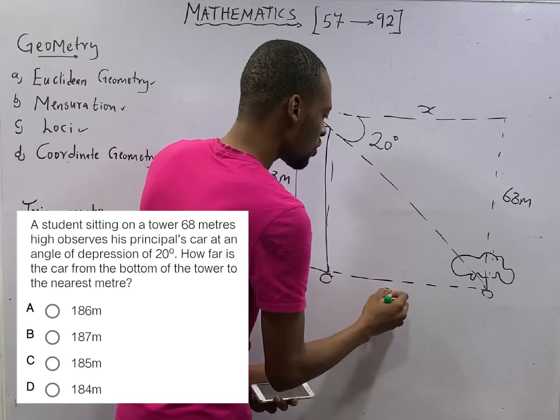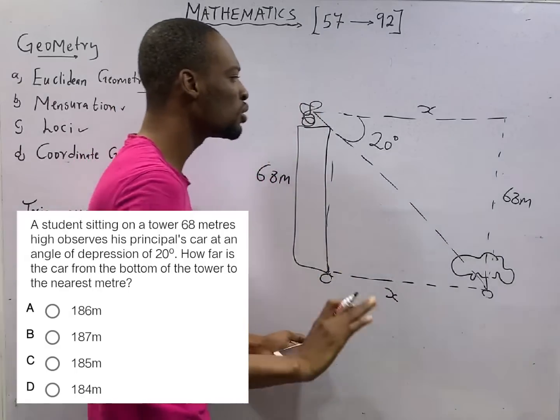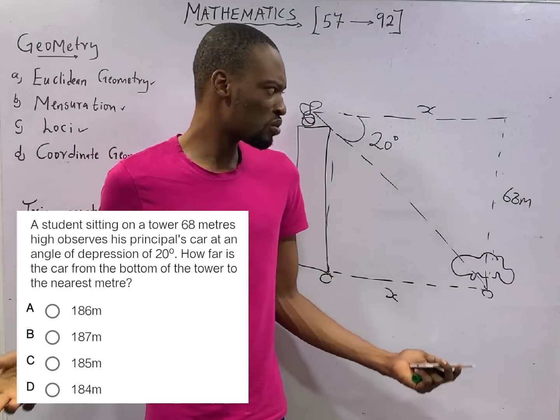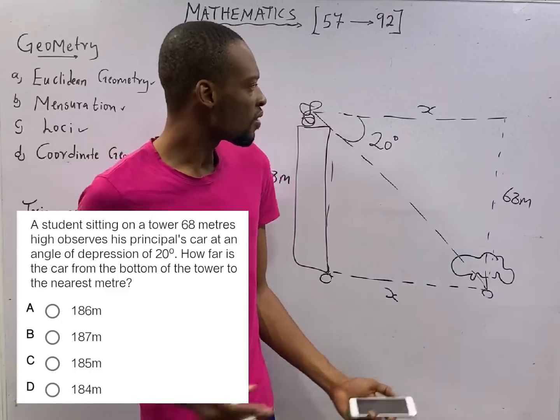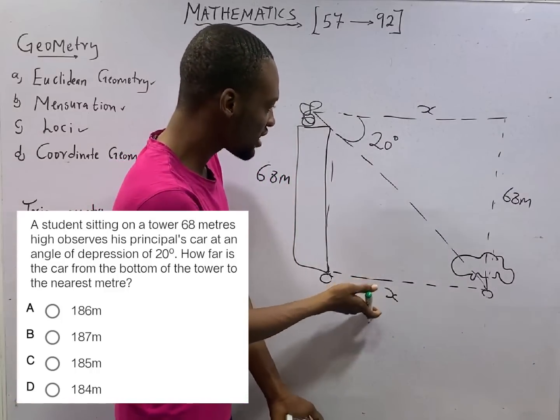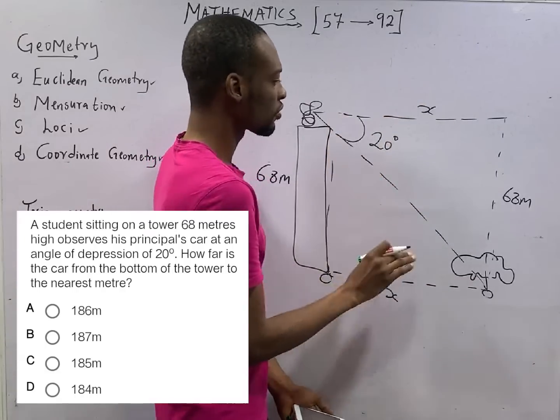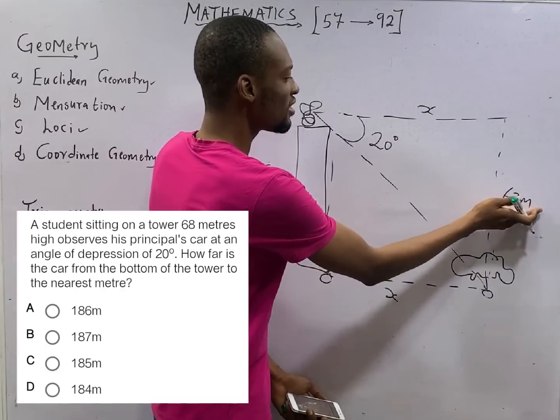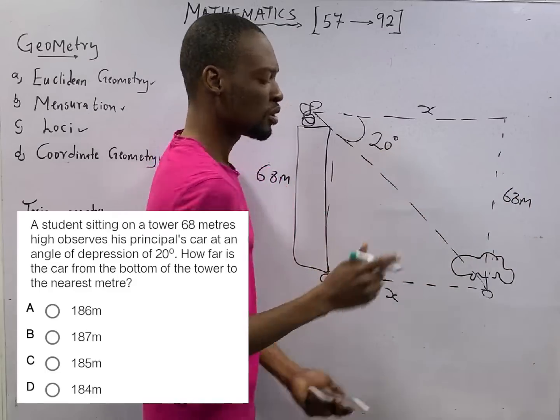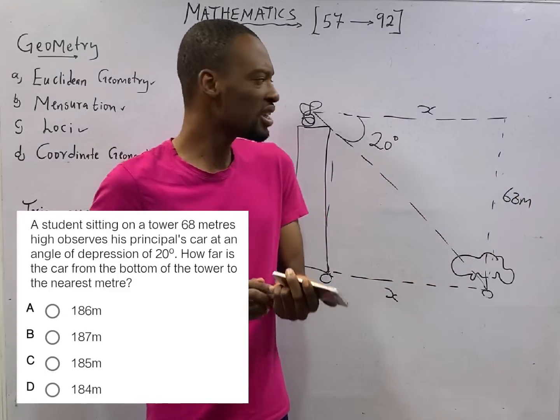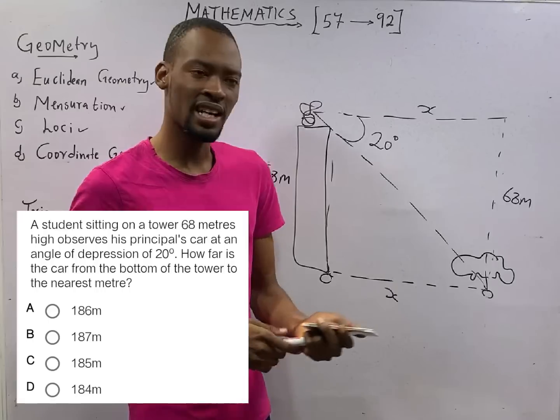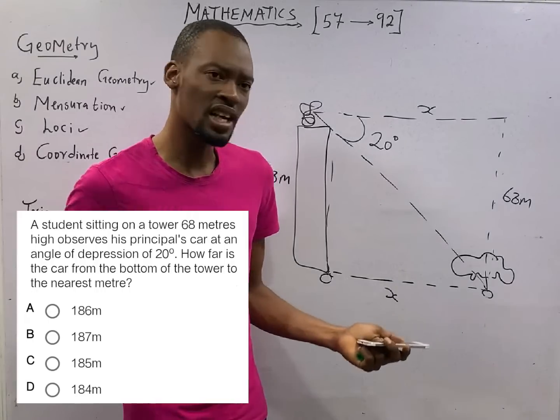And know that the distance from here to here is the same thing as the distance from here to here. You can call here S or call here S. Any triangle you choose to use, you get the answer. The distance is adjacent. The 68 meters is opposite and this is the angle. Which of the three ratio relates opposite and adjacent? That should be tan theta.